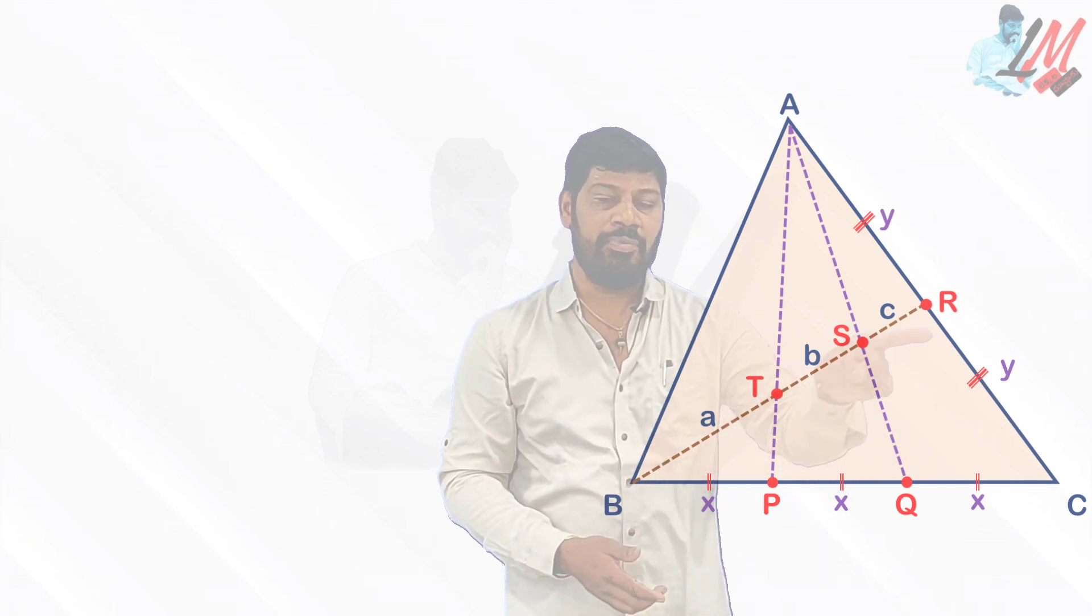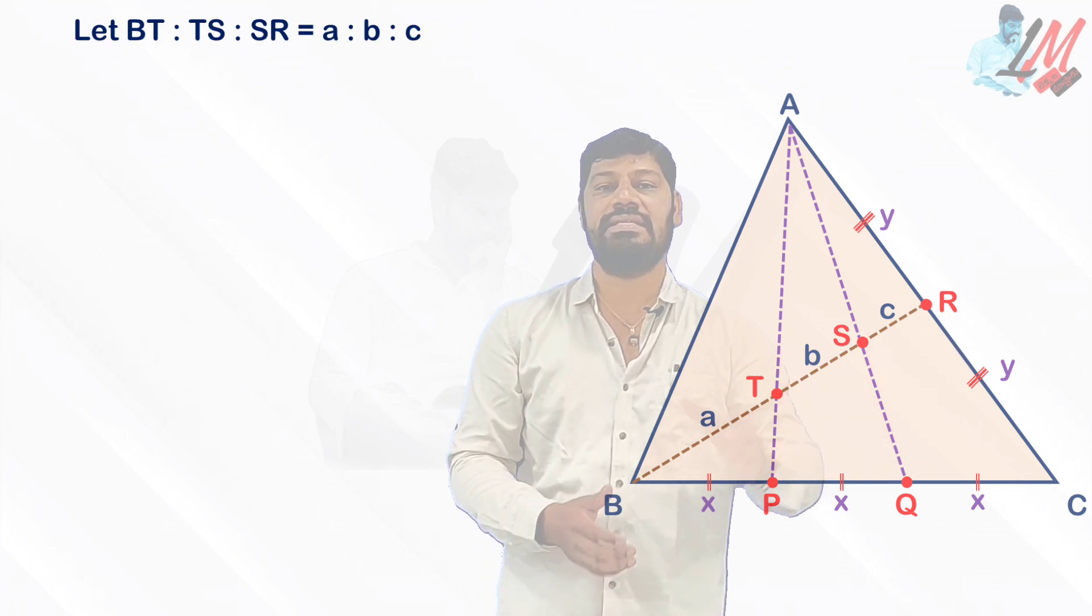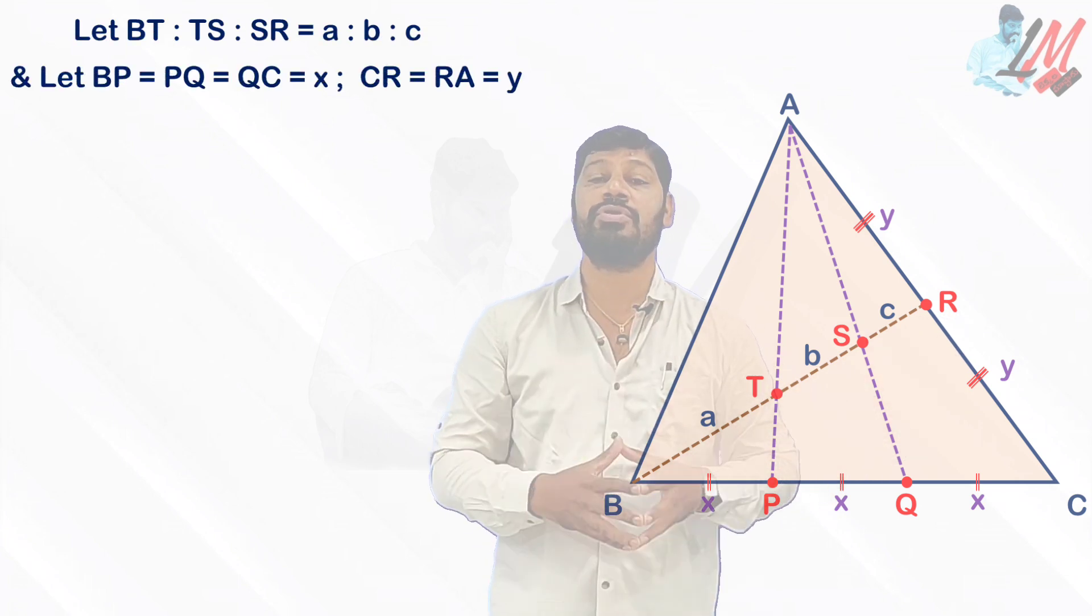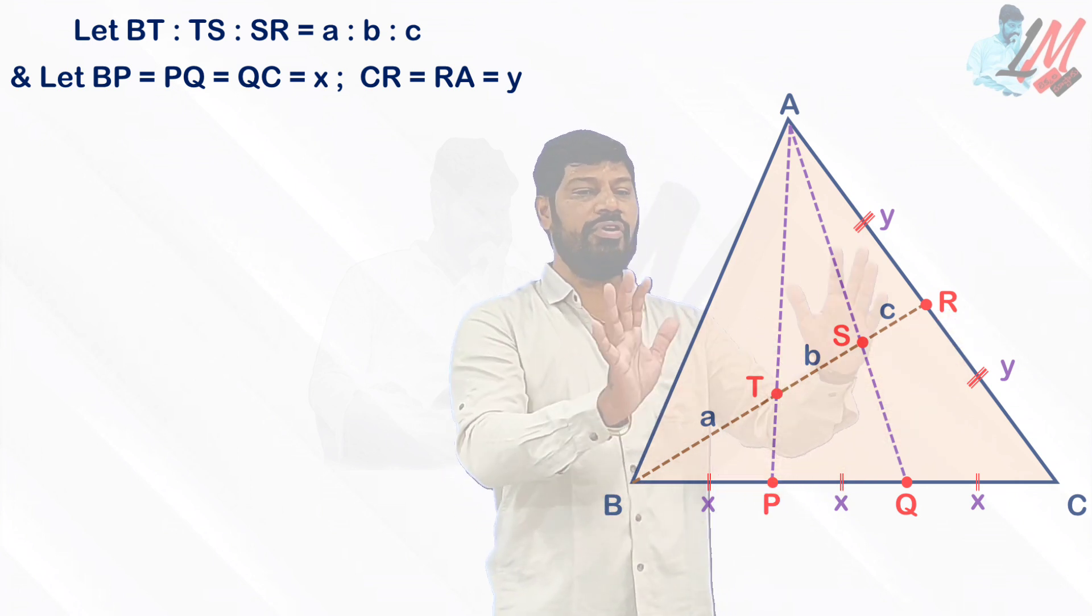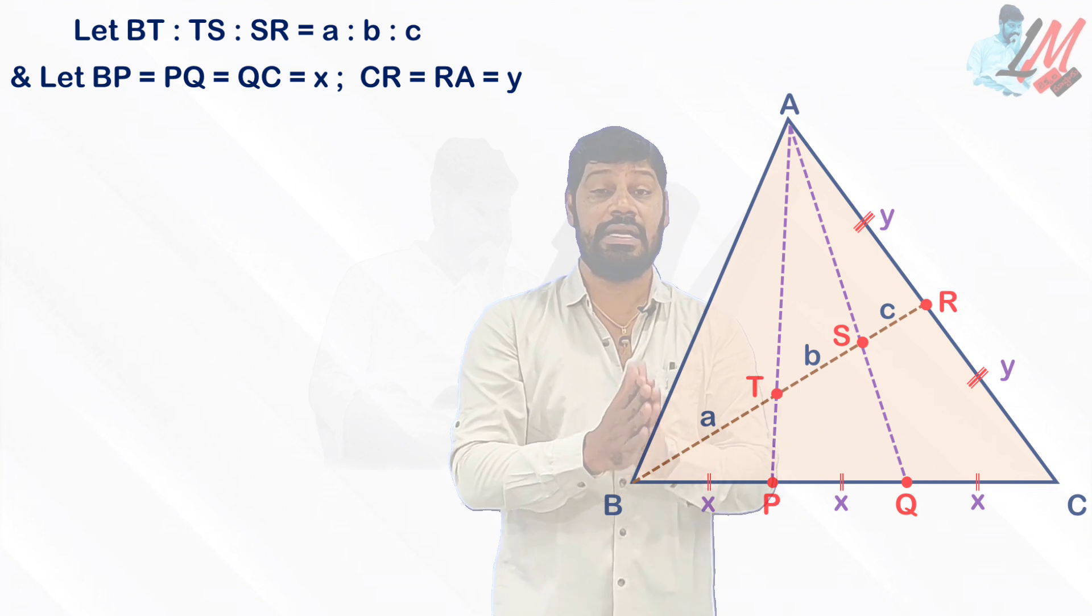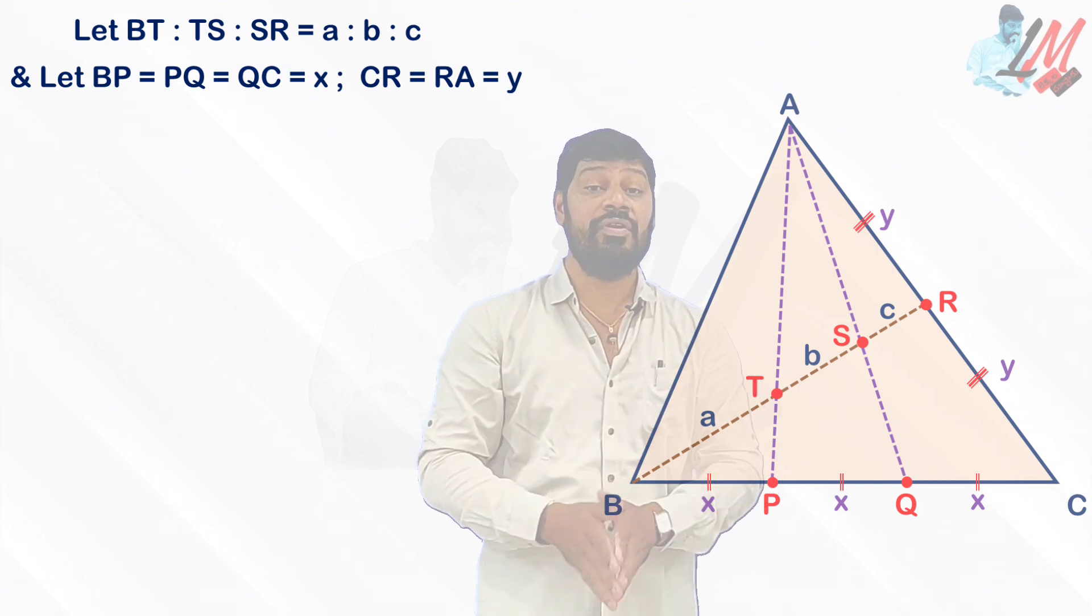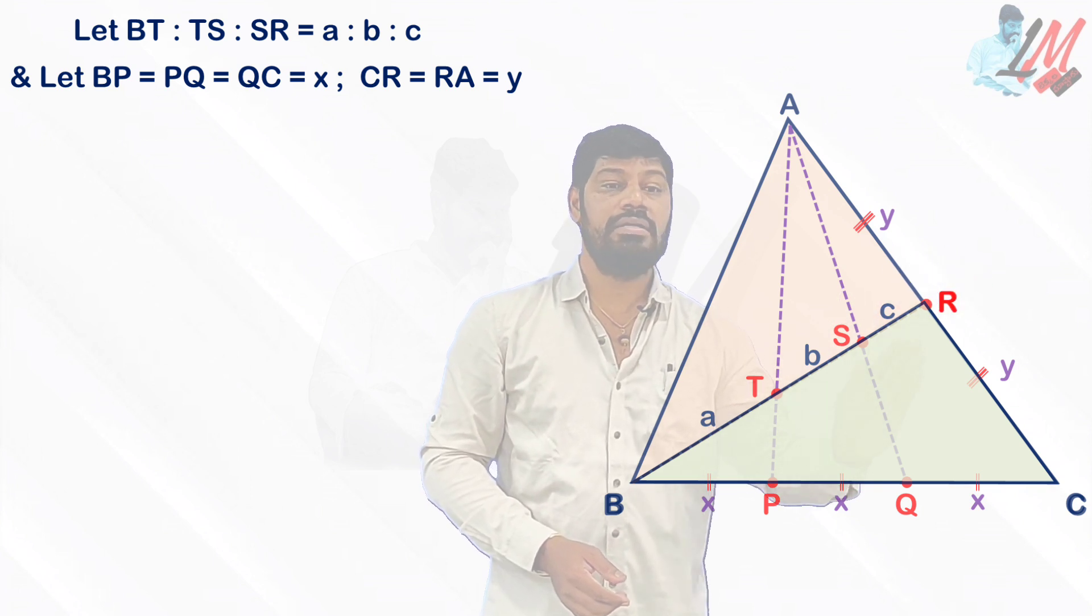Similarly, whatever the two different parts which are equal to each other, you can see here AR and RC, let me consider as Y and Y. Now whatever the different parts you can see of this BR, let me consider as A, B, C. Something like that, we are supposed to find out the numerical values of A, B, C.